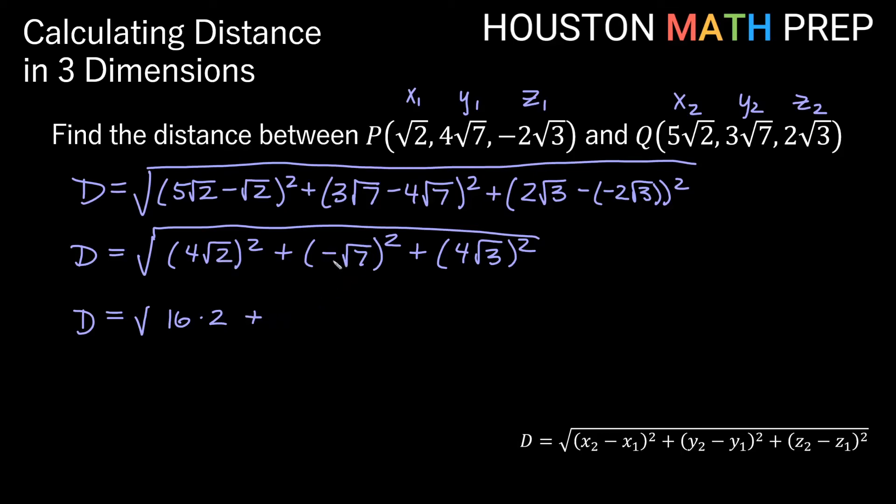Plus this negative times a negative is going to give us a positive. So we get √7 times √7, which is actually just 7 there. Plus we square the 4, so that'll give us 16 times √3 times √3, which would just be 3.